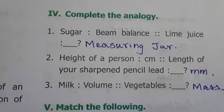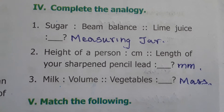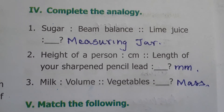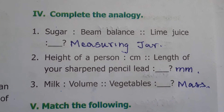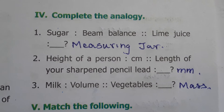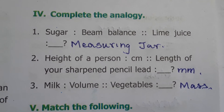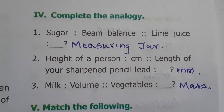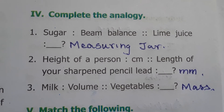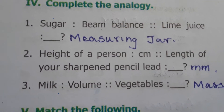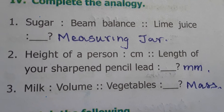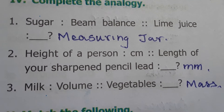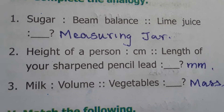Next is complete the analogy. Sugar is measured using a beam balance, whereas lime juice is measured by volume. The height of a person is measured in centimeters, and the length of a sharpened pencil lead is measured in millimeters.